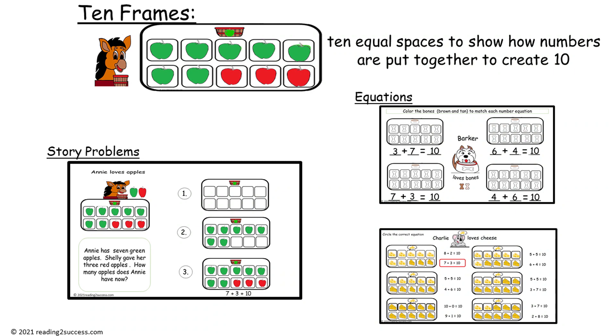They would add three red apples. They would count them and determine that they had ten, and then write the equation: seven plus three equals ten.